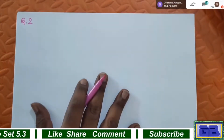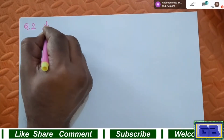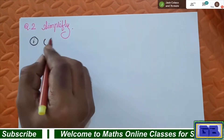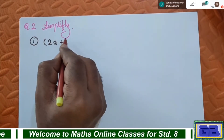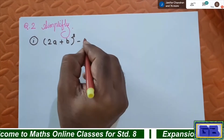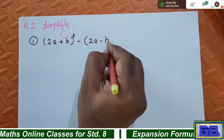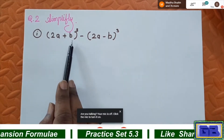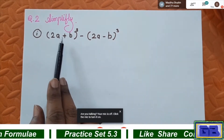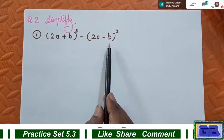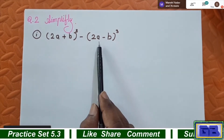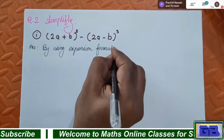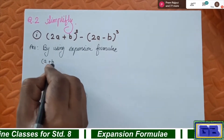Question number 2, first sum: simplify (2a + b)³ minus (2a - b)³. For the first bracket we have to use expansion formula number two, which is the plus formula, and for the second bracket we have to use expansion formula number three, which is the minus formula.